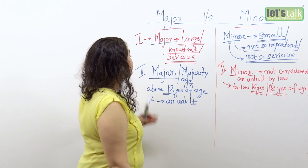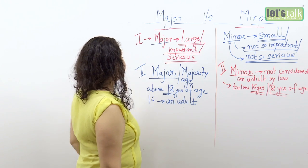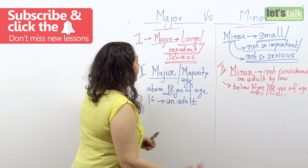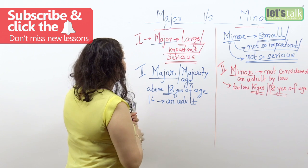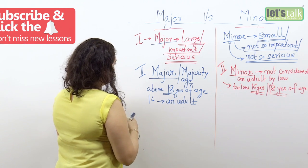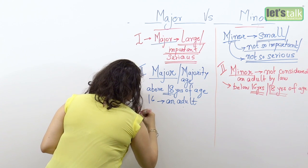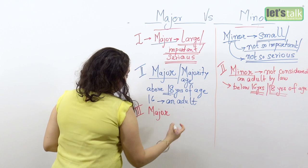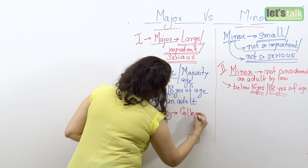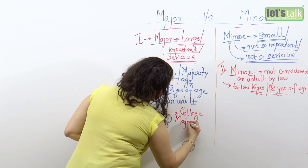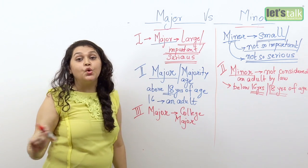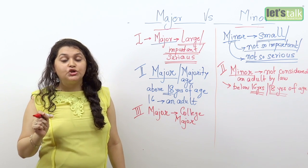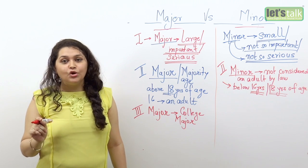So here again the difference between major and minor is very clear: major is somebody considered an adult by law, and minor is somebody who is not considered an adult by law yet. Now the third way in which the words major and minor can be used is related to college education. So your college major means the subject that you are majoring in or specializing in — a subject on which you are carrying out an intensive study in your college course.